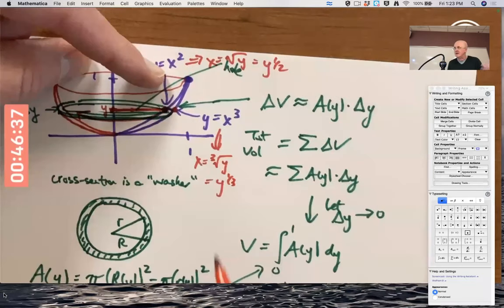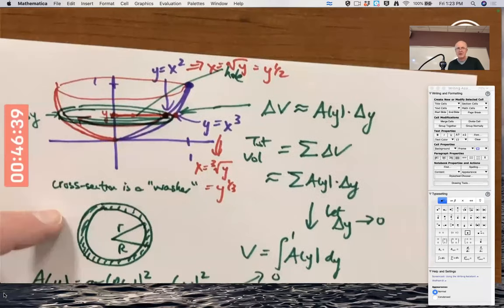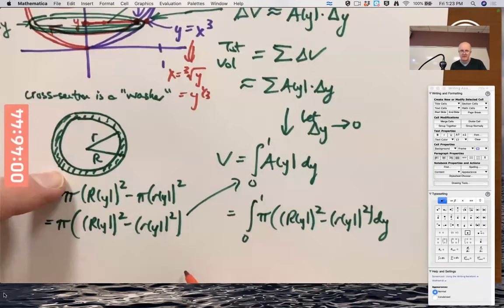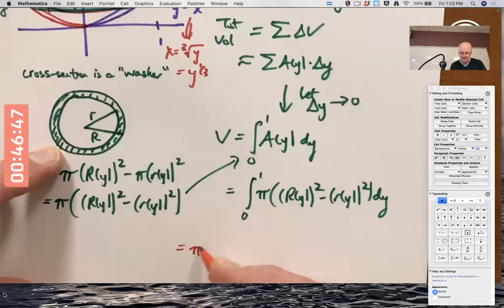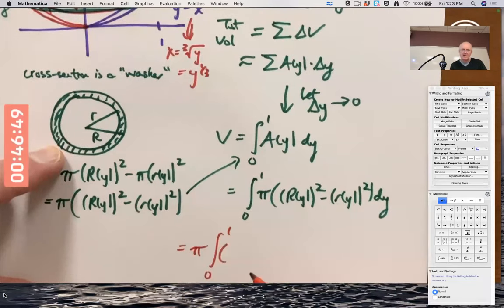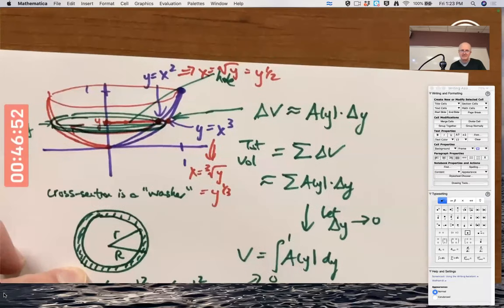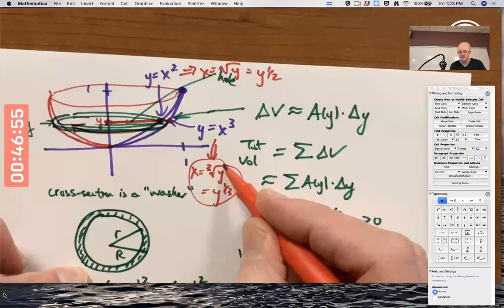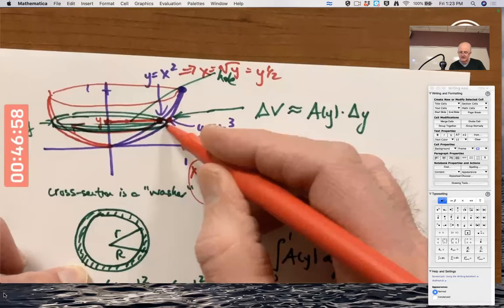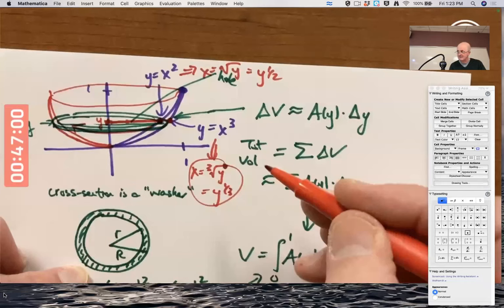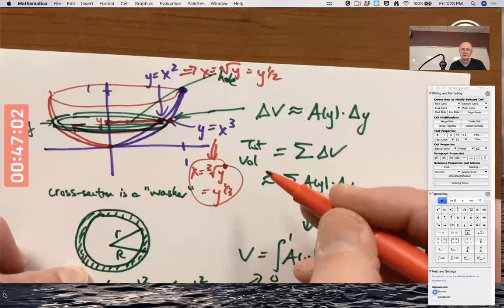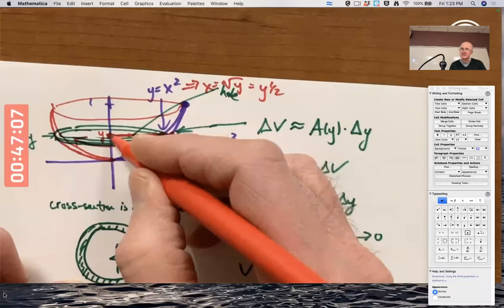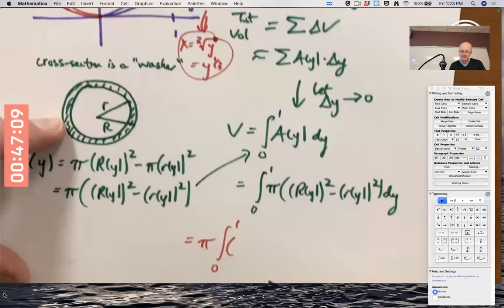And you got to get it in terms of y because we're integrating with respect to y. So this becomes – I'll factor the pi out in front. Pi times the integral from zero to one. Capital R, careful, corresponds to this one. That's capital R because that's the second graph that's further from the y-axis. And little r corresponds to this one. That's the top graph that's closer to the y-axis. So you got to be really careful here.